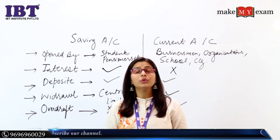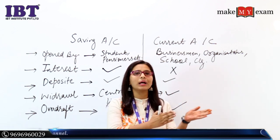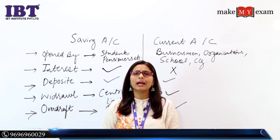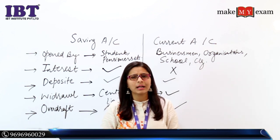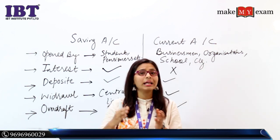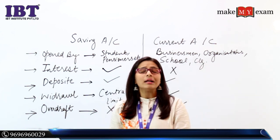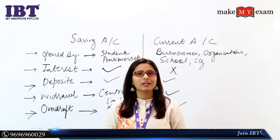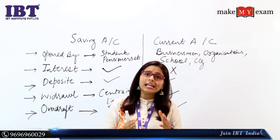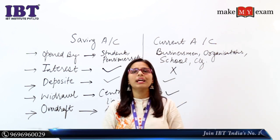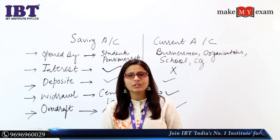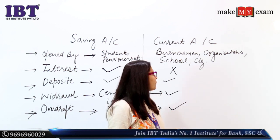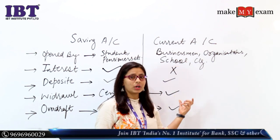After that if I have to withdraw 6 lakhs, I will use a current account. So daily transactions — say you have to withdraw 2 lakhs today, then 3 lakhs, and the day after tomorrow 2 lakhs, and the next day 7 lakhs — so daily transactions with a high number of withdrawals are very frequent.